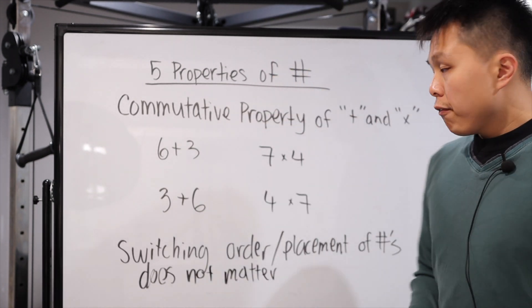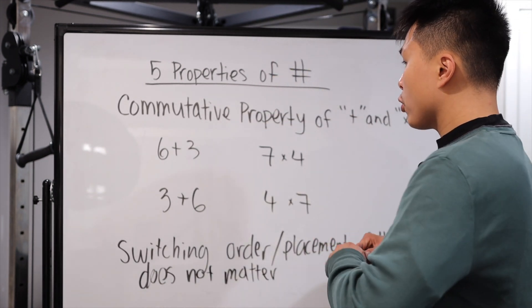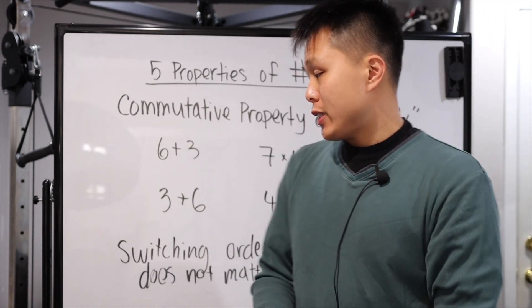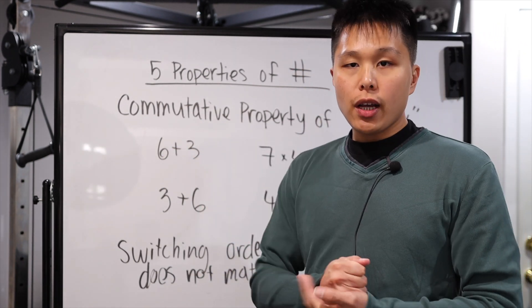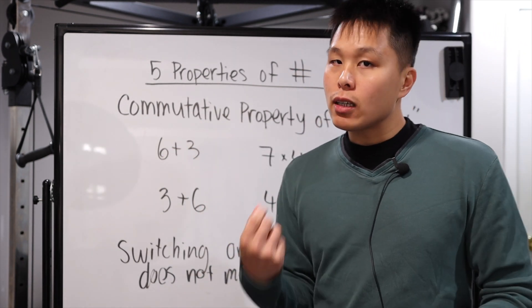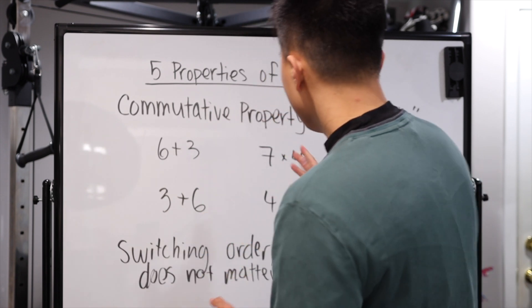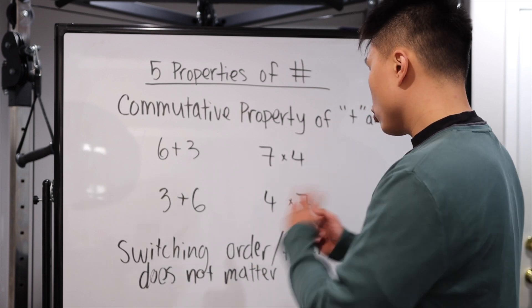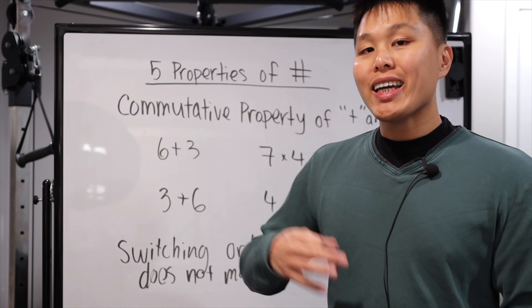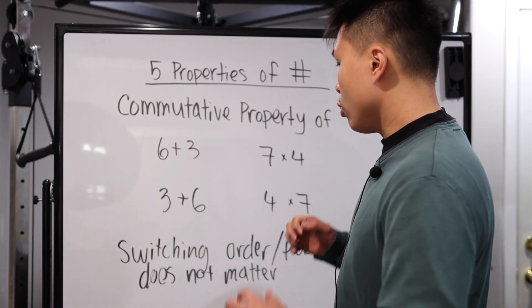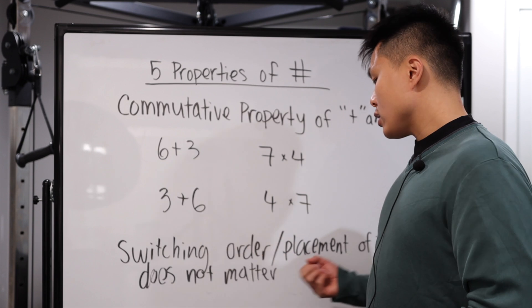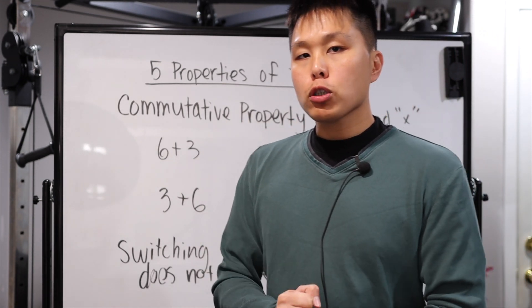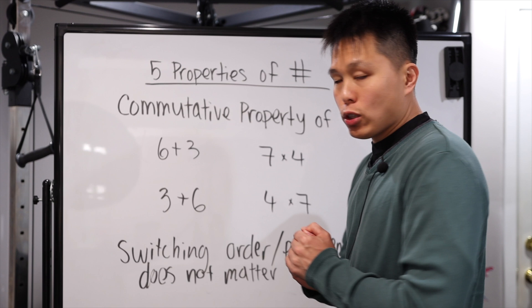Okay, so fairly simple. What it means is, for example, when you're adding, if you switch the numbers around, the answer is still the same. Six plus three is nine. Three plus six is still nine. Doesn't change. When you do it for multiplication, once again, seven times four is just 28. Switch it around and you have four times seven, it is still 28. So the beauty of this is that yes, you can switch it however you want for addition and multiplication, and it doesn't change the answer in any way.